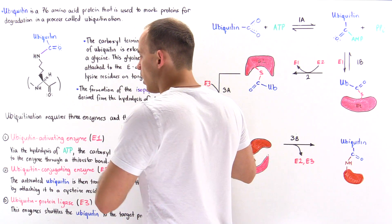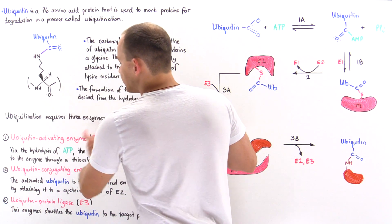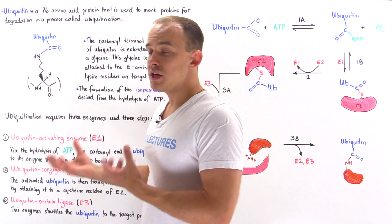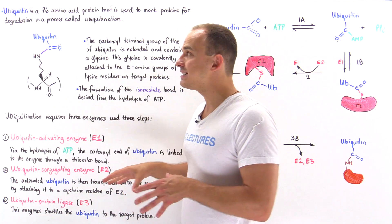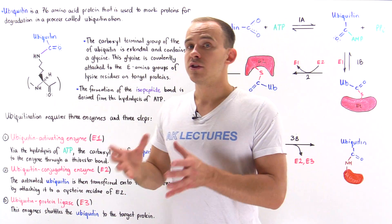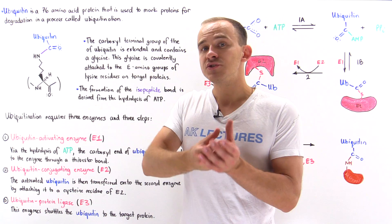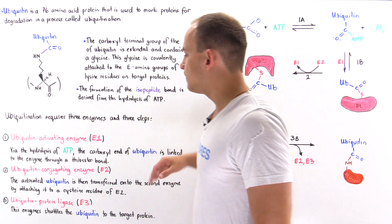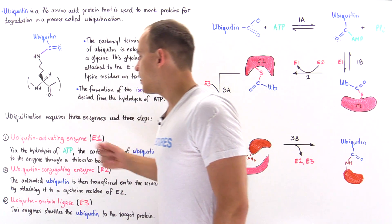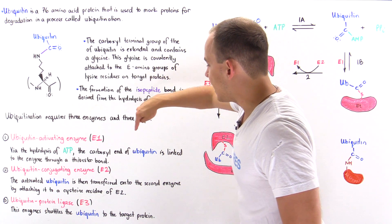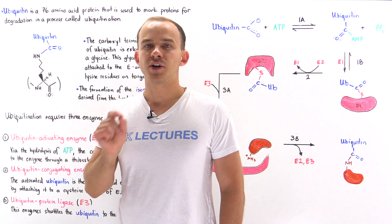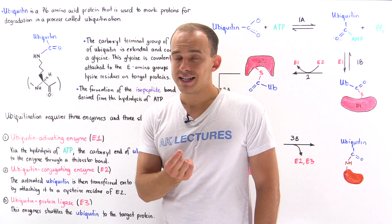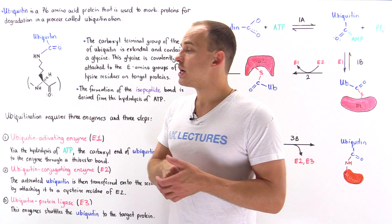Step one utilizes the enzyme called ubiquitin activating enzyme. What this enzyme does is harvest the energy released when we hydrolyze ATP and use that energy to activate the ubiquitin molecule, preparing it to ultimately attach onto the target protein. Step one is catalyzed by ubiquitin activating enzyme, or E1, via the hydrolysis of ATP, and the carboxyl end of ubiquitin is linked to the enzyme via a thioester bond. Enzyme E1 has a cysteine whose side chain is used to attach the ubiquitin molecule.